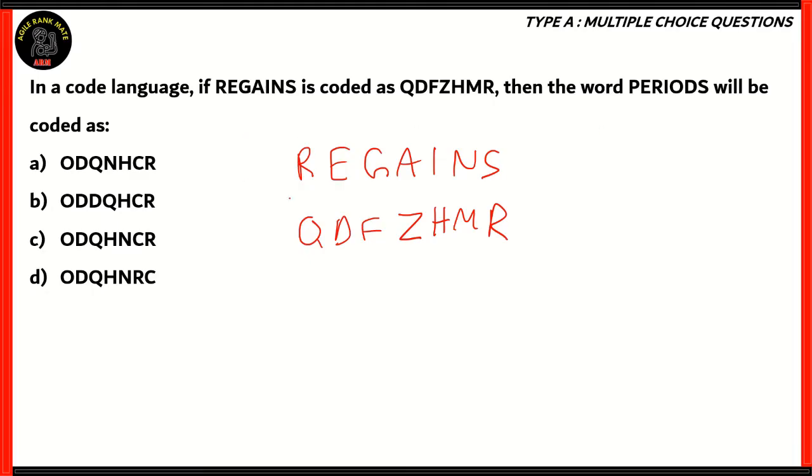We're going to analyze the code between REGAINS and QDFZHMR. R-E-G-A-I-N-S becomes Q-D-F-Z-H-M-R. If you look at the letters R and Q, you can see that Q comes before R in the alphabetical order. The order for the complete code language is to use the previous letter for that particular letter.